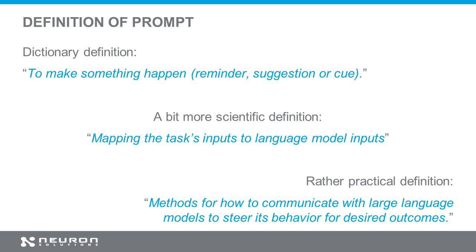That is actually the same definition shown last time: mapping the task input — what's coming from the task, like style of Metallica or something — to the language model inputs, somehow translating so the language model can do something with that. And then a more practical definition: this is the method of how we communicate with the language model, how we tell something to the language model in order to get the answer we need.